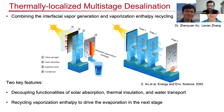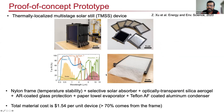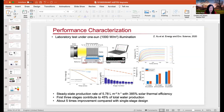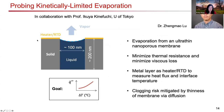A question from Teja asks how and where temperature is measured in the kinetically limited evaporation experiment on nanopores. Professor Wang explains that the metal layer on the membrane serves as both heater and thermocouple. Temperature is measured as a function of the change in electrical resistance — calibrated using the known resistance-temperature relationship for the metal. Because the structure is very small, the measured temperature is taken to represent the temperature at the interface.